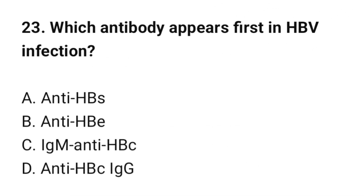Question number 23: Which antibody appears first in HBV infection? The correct option is C: IgM anti-HBc.